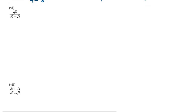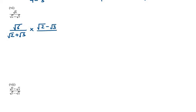Let's start with the 6th part. 6th part is under root 6 over under root 2 plus under root 3. We need to multiply and divide by under root 2 minus under root 3. In the numerator we have under root 6 multiplied by under root 2 minus under root 3. So we get under root 12 minus under root 18.